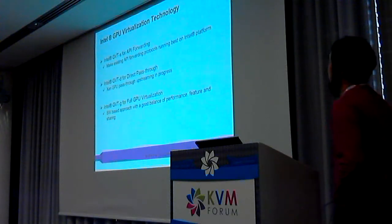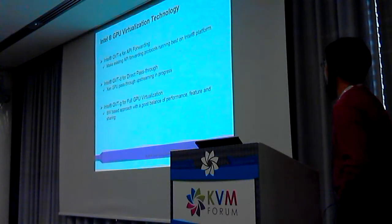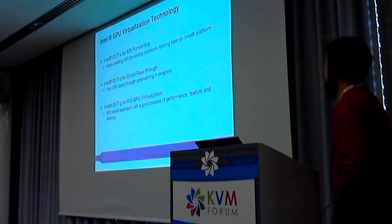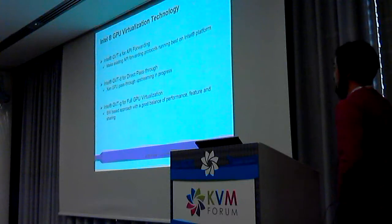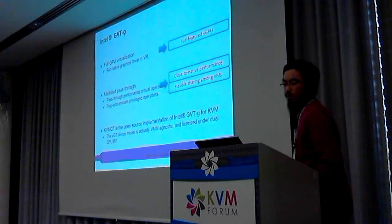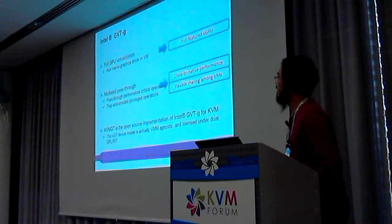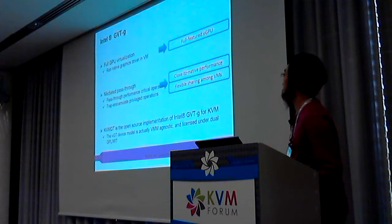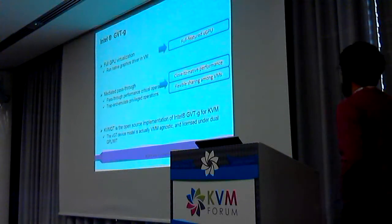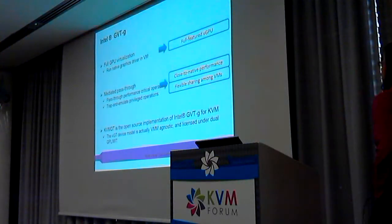Intel has technologies corresponding to the three approaches mentioned above: GVTS for API forwarding, GVTD for direct pass-through, and GVTG for full GPU virtualization. From now on, we are focused on GVTG. Intel GVTG is a full GPU virtualization solution, designed to run the native graphics driver in the VM, which means full-featured vGPU for VMs. It achieves good performance and sharing capability by a method called MPT — Mediated Pass-through.